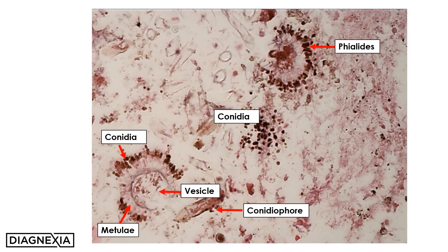Also noted are remnants of conidiophores. These are the heads of a conidiophore that have been decapitated and are somewhat degenerate. But one can identify conidia peripherally, underlying metulae, as well as phylides which give rise to the conidia. A central space is noted and this corresponds to the vesicle. When intact, this represents the conidiophore.